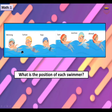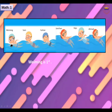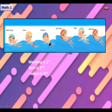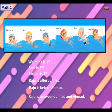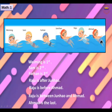Now, what is the position of each swimmer in this picture? Whamming is first. Sam is second. Farhan is third. Raju is after Junhao. Raju is before Ahmed, and Raju is in between Junhao and Ahmed. Ahmed is the last.